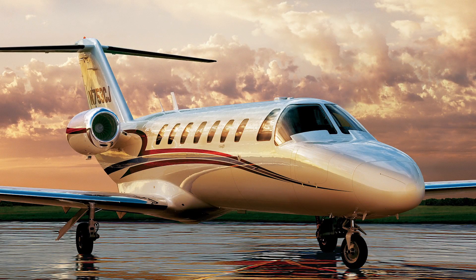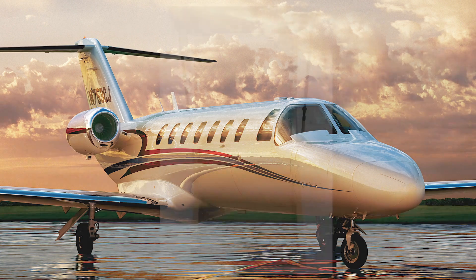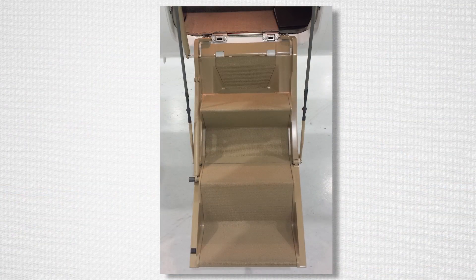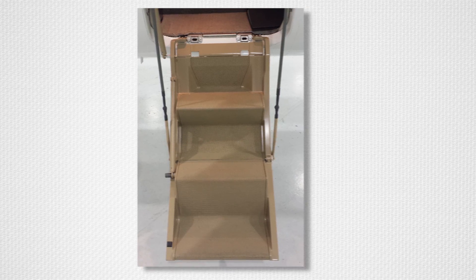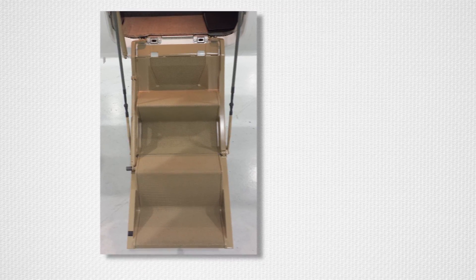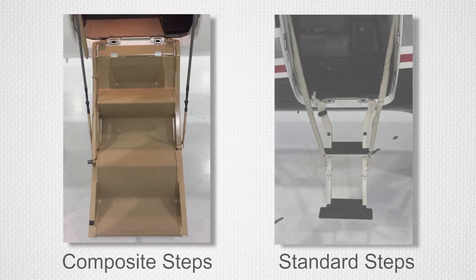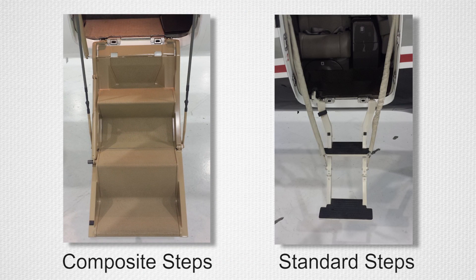This video offers guidance on identifying the correct step assembly cable part number for composite step assemblies on 525, 525A, and 525B model Citation aircraft. The composite step assembly is distinguished from the standard step assembly on these aircraft by the shape and number of steps.